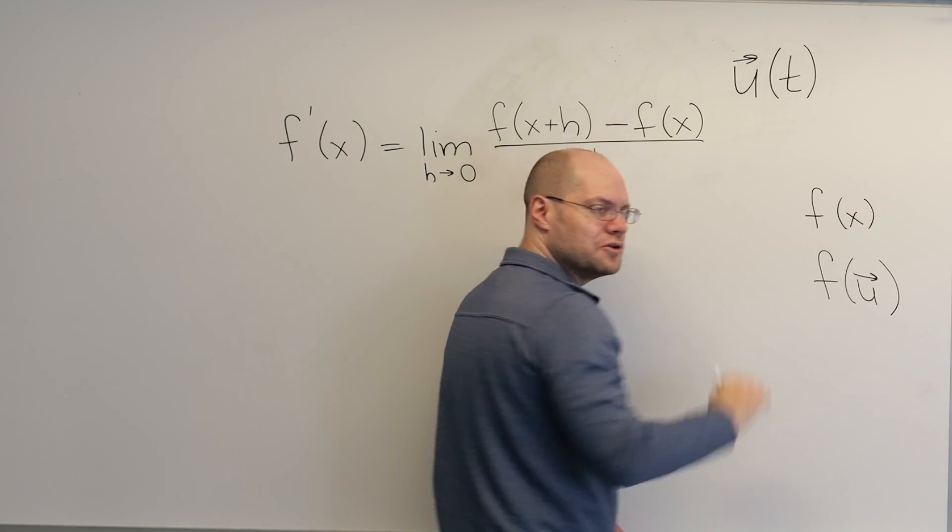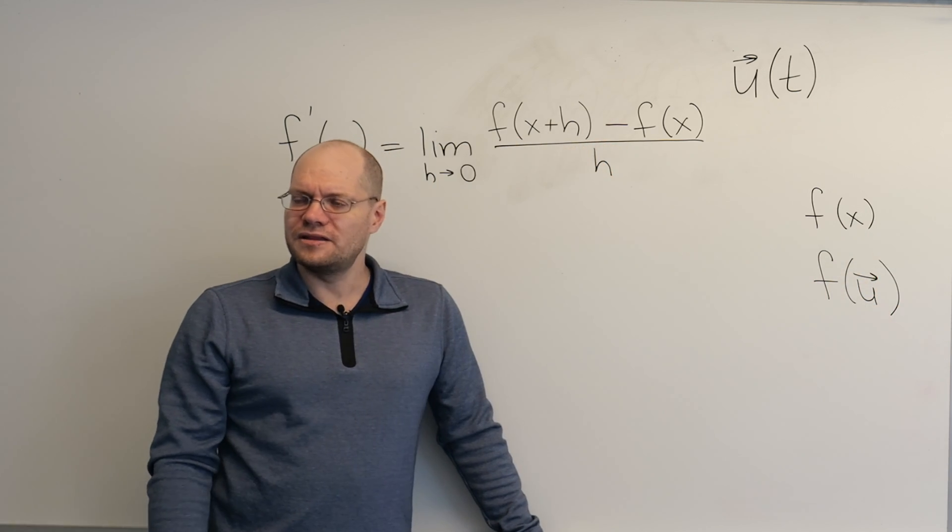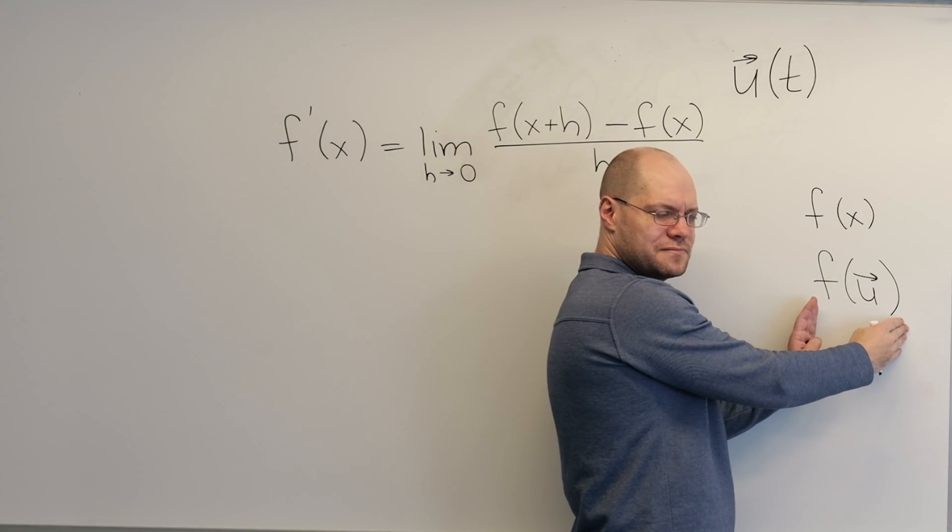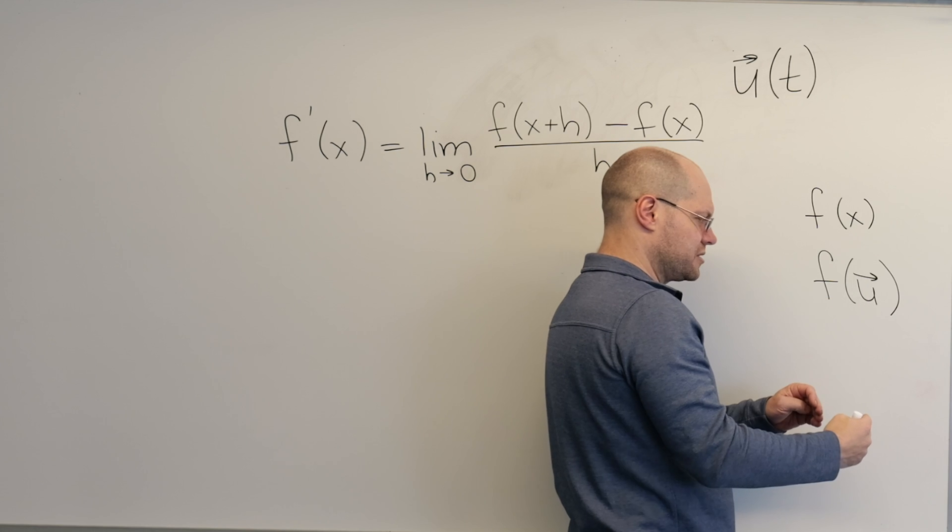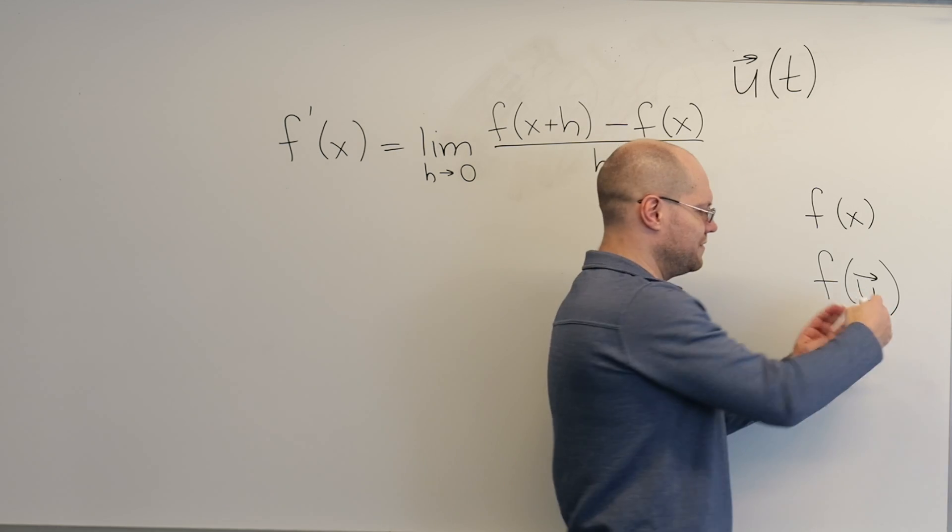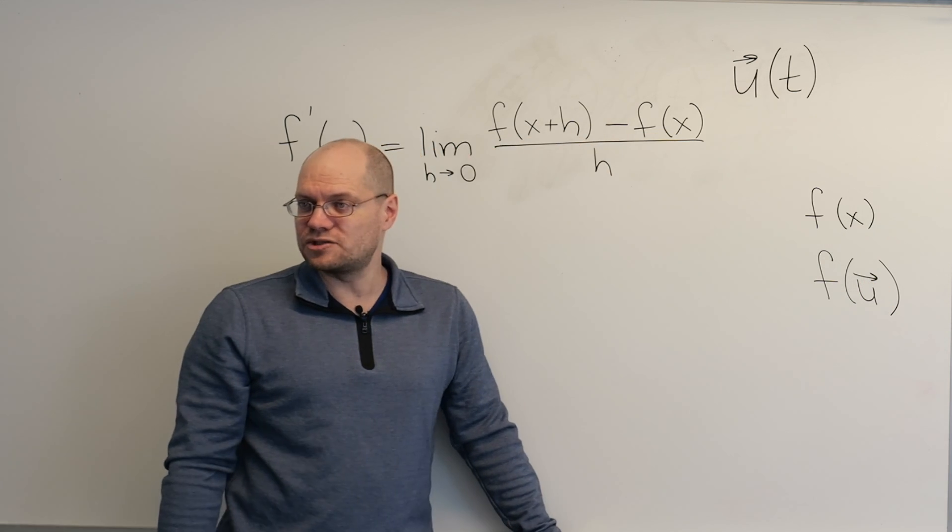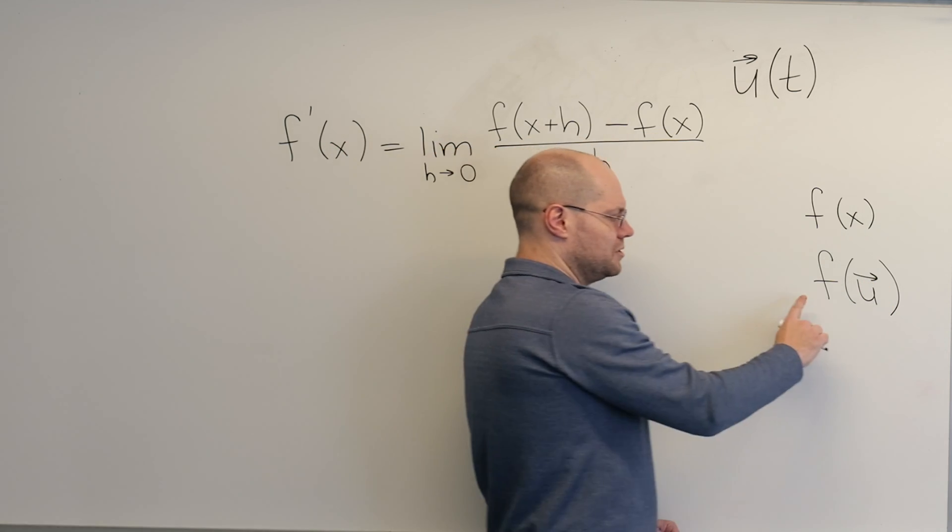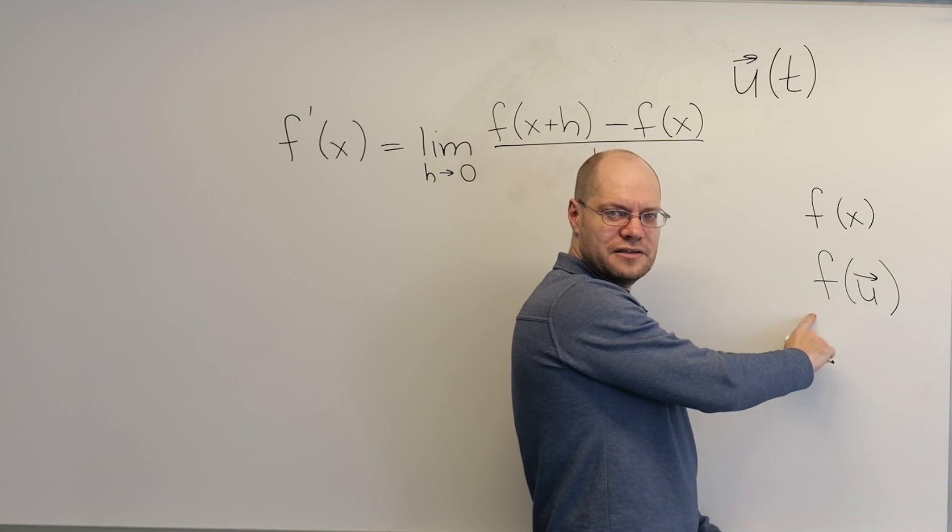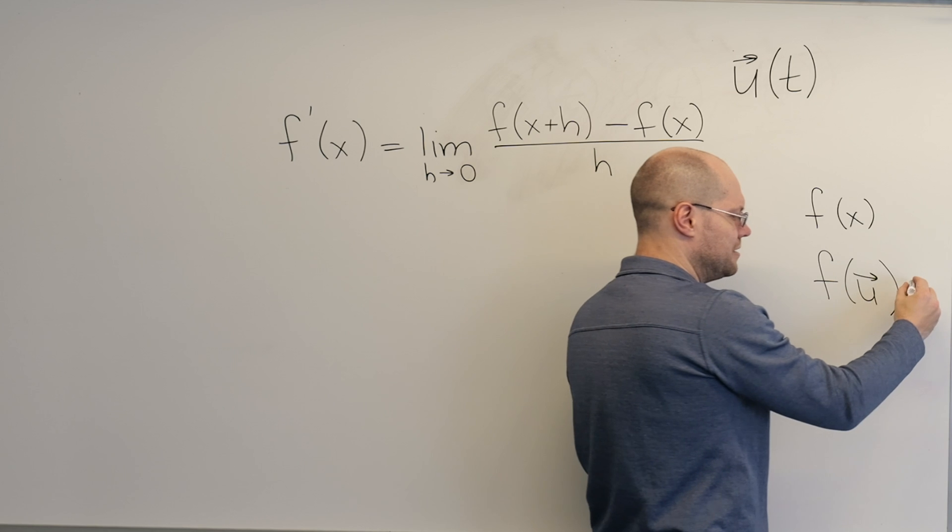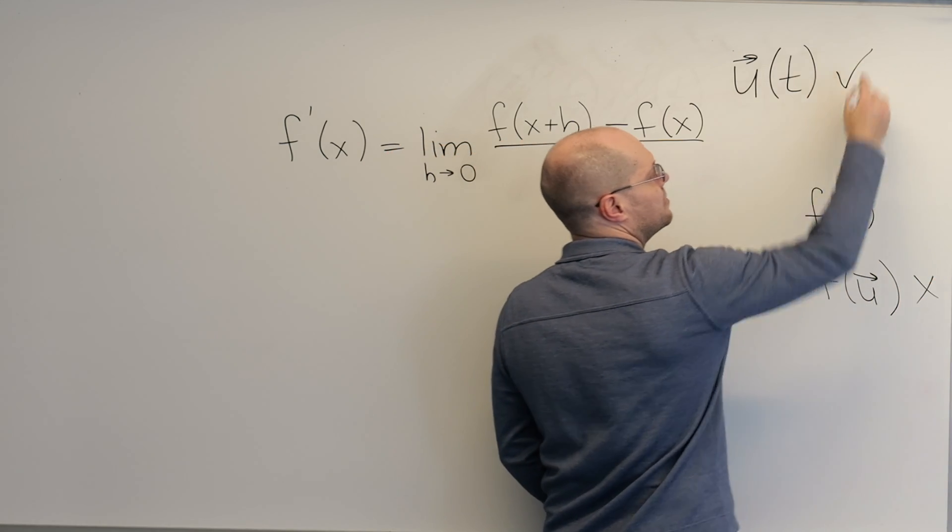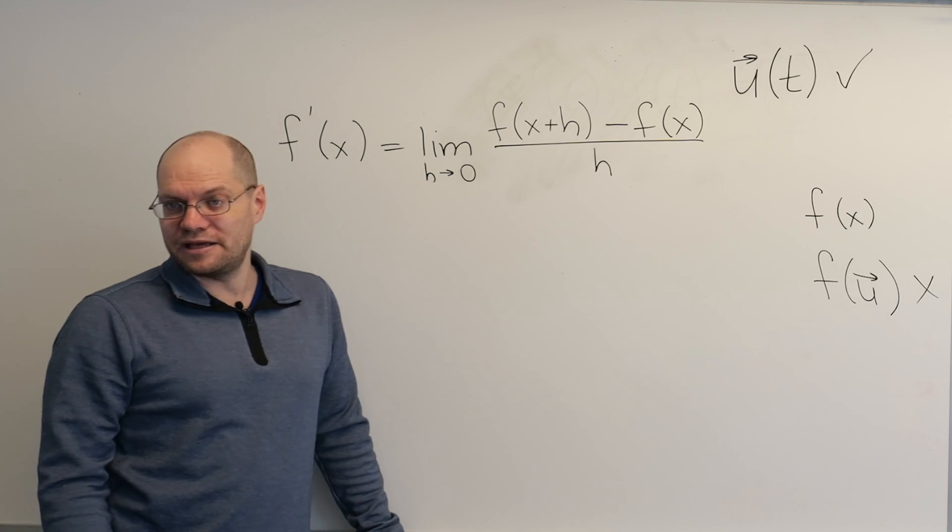What we'll never see is something like this, where the argument is a vector. Now you could absolutely think of something like this. Taxonomy-wise, it works. You give it a vector, it gives you back a number. You give it another vector, it gives you back another number. And so on. But you will see why we would have a very hard time defining the derivative of this. So this is something we won't consider. And this is something that we will consider.